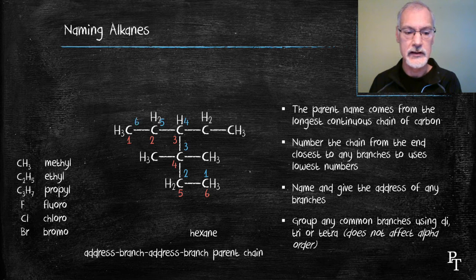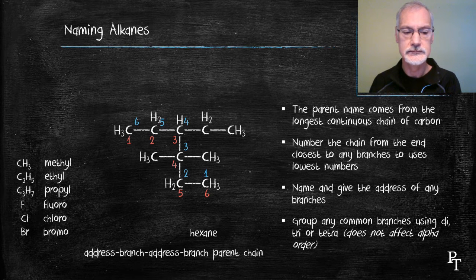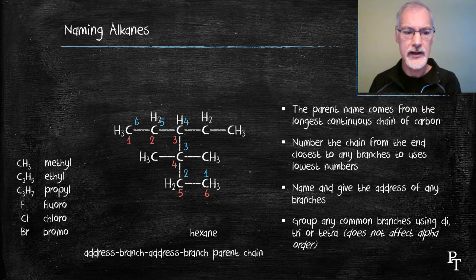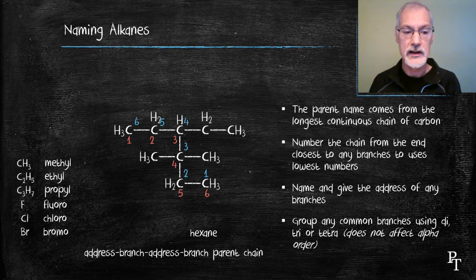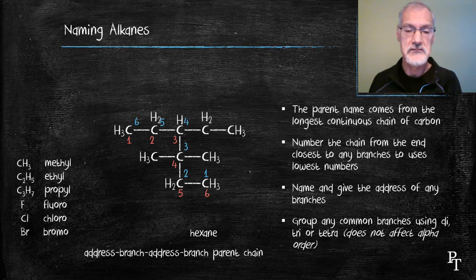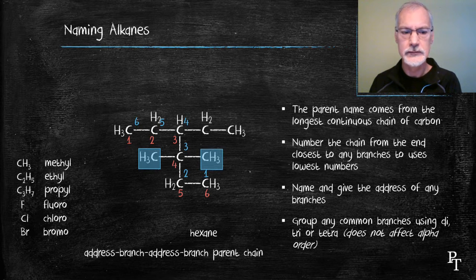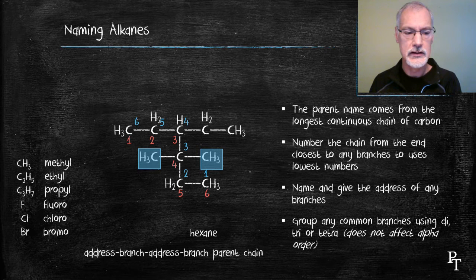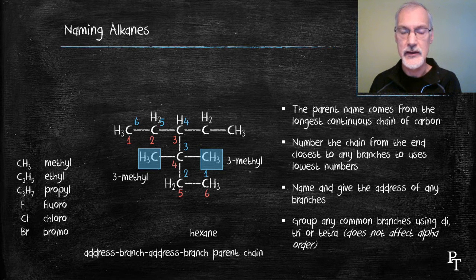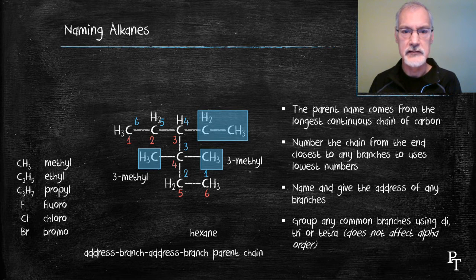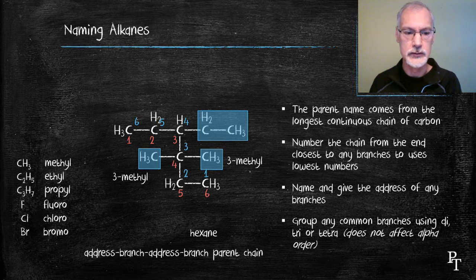I then will start to number my compound with the red numbers and the blue numbers. Now in the use of the red numbers, I get branches at three and four and the blue numbers three and four. So maybe it won't matter. So here I'll identify my side group, methyl. I'll use the blue numbers for now, calling them both three methyl. And identifying the top group, that's an ethyl group, four ethyl.